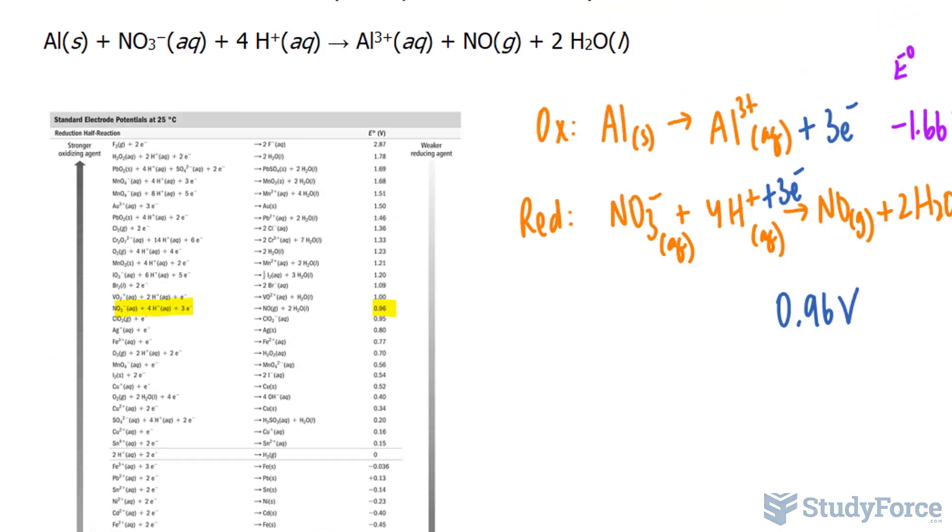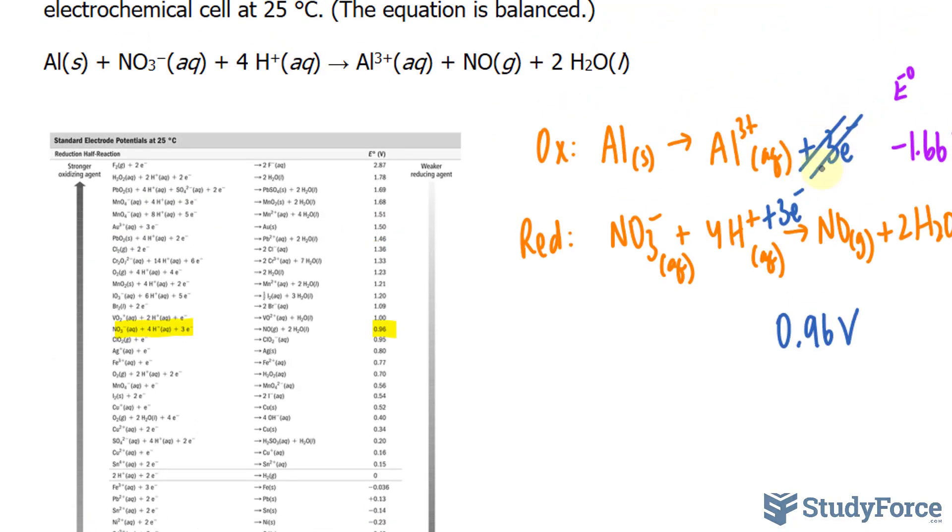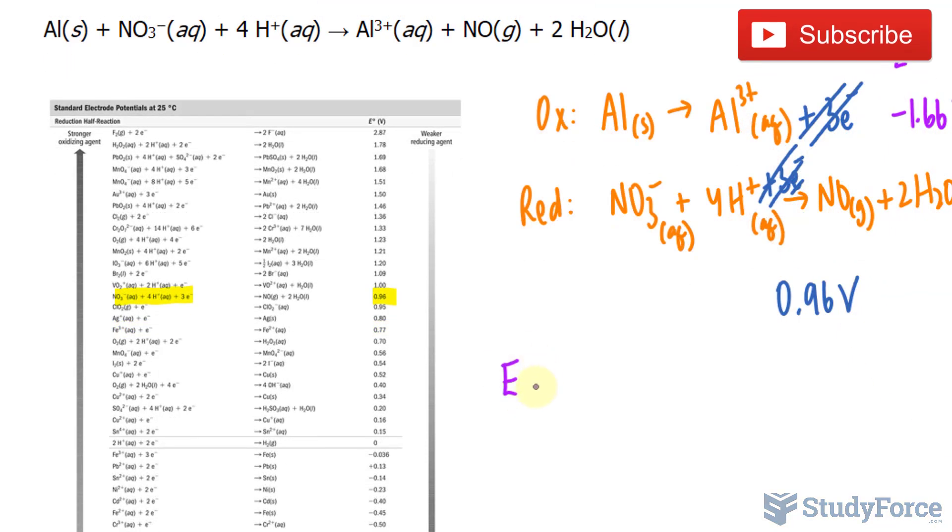So we're going to add these two equations together, where the electrons will cancel out. Take a look. That cancels out with that. And we can calculate the standard cell potential by subtracting the electrode potential of the anode from the electrode potential of the cathode.